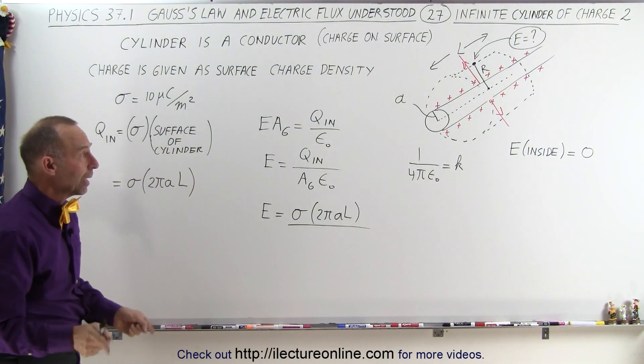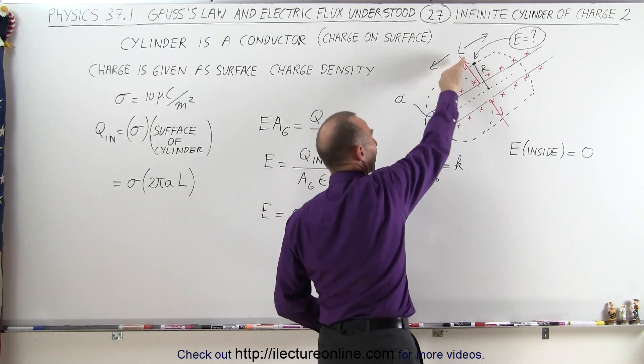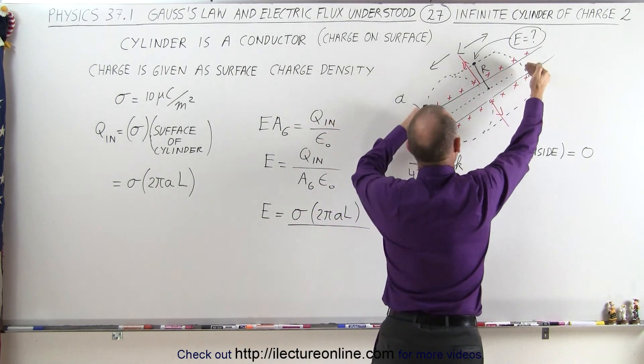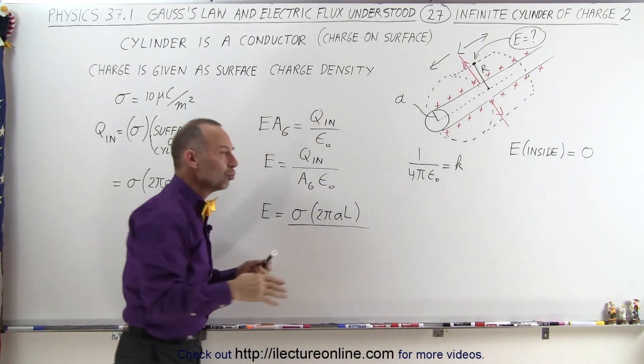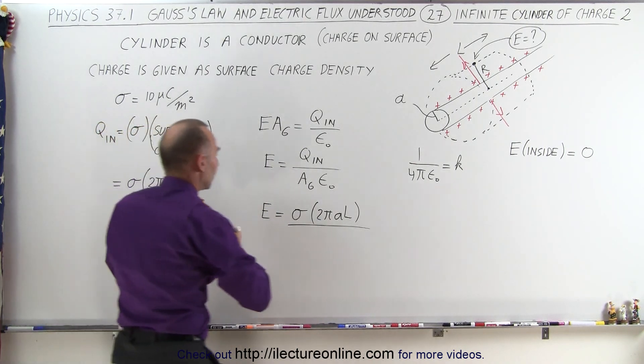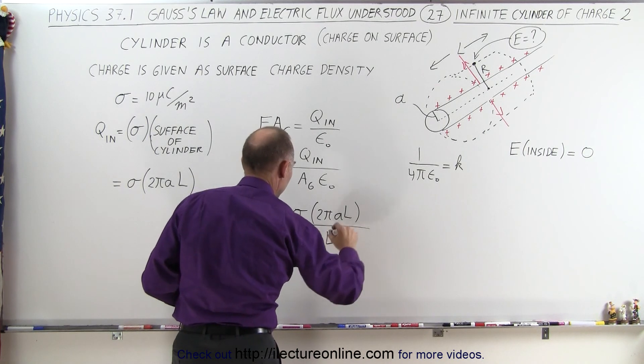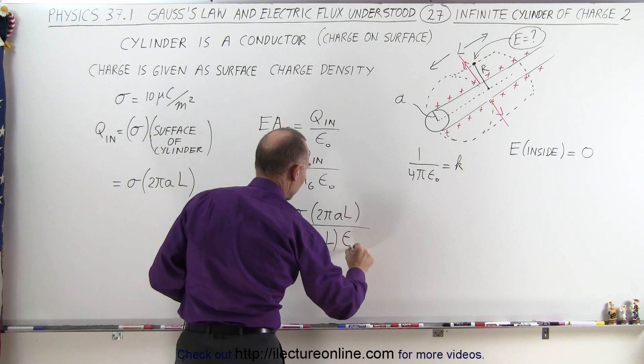So E is equal to σ times 2πAL divided by the surface area of the Gaussian surface to which the electric field emanates. So we have electric flux, which is only on the side of the cylinder, not at the two ends, so again that will be 2π. In this case, the radius will be R, not A, so this will be 2πR_G times L, and times ε₀.